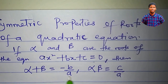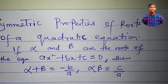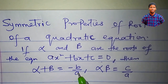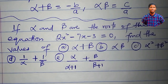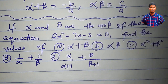There is actually a proof for this, but we are not going to talk about that in this video. Let's just apply it to solve problems. The question is: if alpha and beta are the roots of the equation 2x squared minus 7x minus 3 equal to 0,